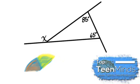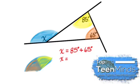And therefore, we can say that X is equal to 85 degrees plus 65 degrees, or the two opposite interior angles to the exterior. And therefore, X must be 150 degrees.